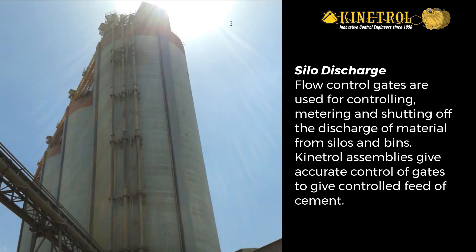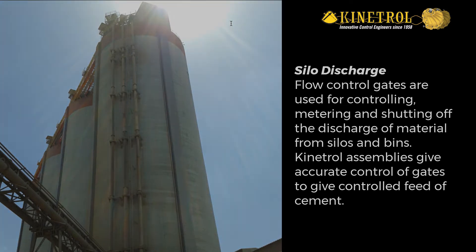Silo discharge: flow-controlled gates are used for controlling, metering, and shutting off the discharge of material from silos and bins. Kinetrol assemblies give accurate control of gates to give controlled feed of cement.